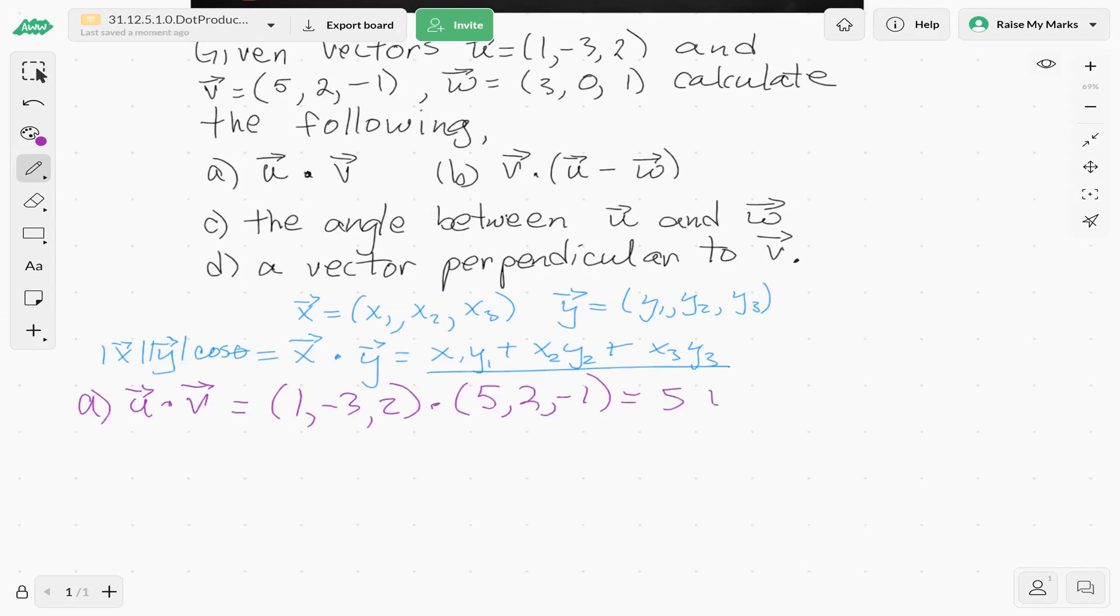Multiply corresponding components, so 1 times 5 is 5, plus negative 3 times 2 is negative 6, plus 2 times negative 1 is negative 2. So what does that give us? That gives us negative 3. That's our dot product.